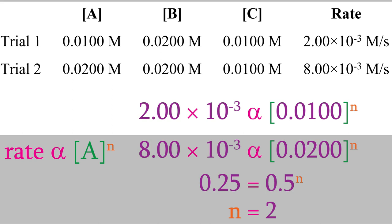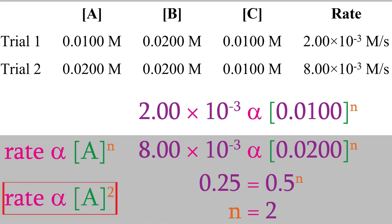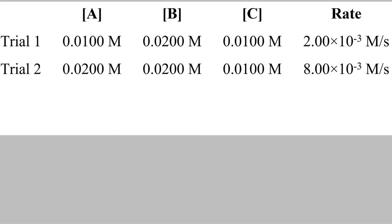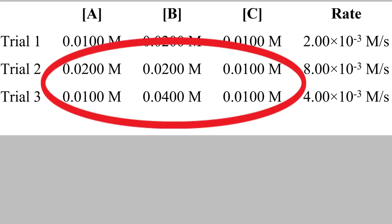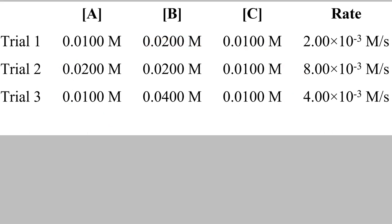We now know that the exponent for reactant A is 2. Next, let's find the exponents for B and C. To do that, we need to do a third trial. This time, our initial concentrations are 0.0100 molar, 0.0400 molar, and 0.0100 molar for A, B, and C. When we measure the rate, we find out that it's 4.00 times 10 to the minus 3 molars per second. Once again, we need to look at the ratio between the rates and between the concentrations. But we need to be a little careful — we don't want to compare this trial with the previous one.